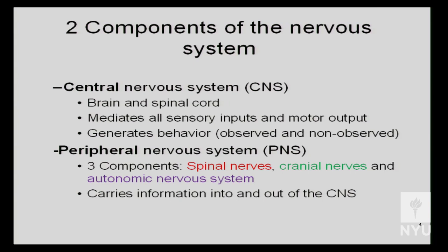The peripheral nervous system is made up of three main components. The first are the spinal nerves. The second is a subcategory called the cranial nerves, which allow us to bring in information and give out motor commands specifically for the head and the neck. And the third component is the autonomic nervous system, the non-conscious part of the peripheral nervous system. All three carry sensory information into and motor information out of the central nervous system.